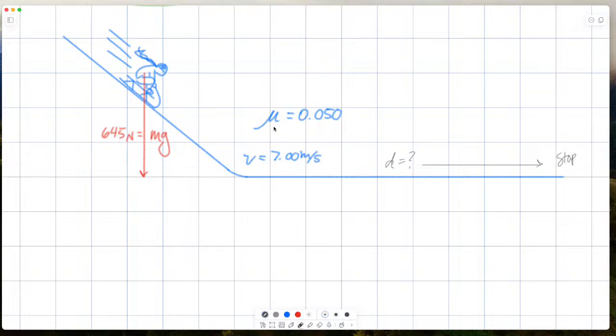So the coefficient of kinetic friction between the sled and the ground is 0.050. Her velocity at the point she enters into the flat section is 7 meters per second. And her weight total with her and the sled and everything is 645 newtons. That's equal to mg.